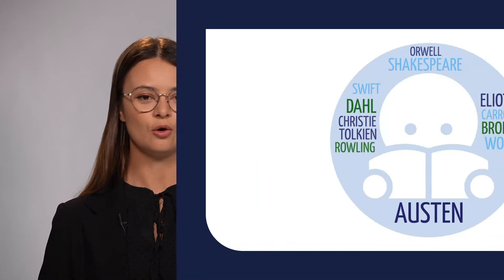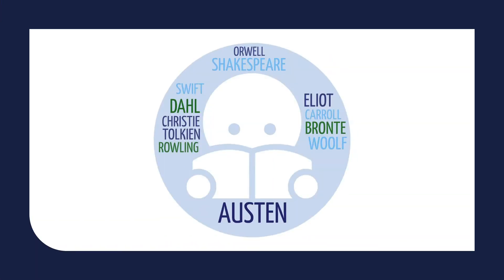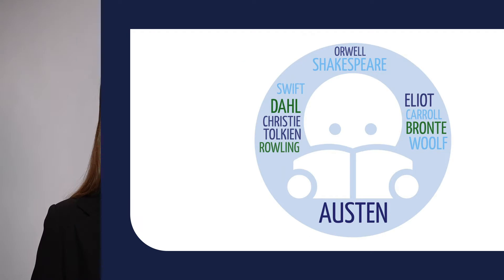Can you guess how these words are connected? Orwell, Shakespeare, Swift, Dull, Christie, Tolkien, Rowling, Austin, Elliot, Carroll, Bronte and Wolfe. All these are the surnames of famous British writers.